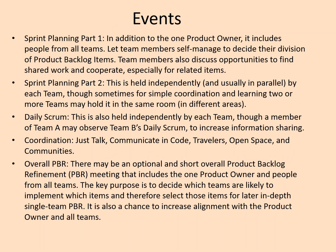In Sprint Planning Part One, in addition to the one product owner, it includes people from all teams. Team members self-manage to decide their division of product backlog items, and team members also discuss opportunities to find shared work and cooperate, especially for related items.